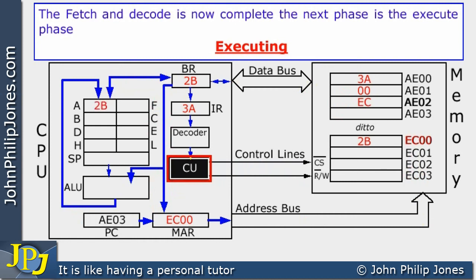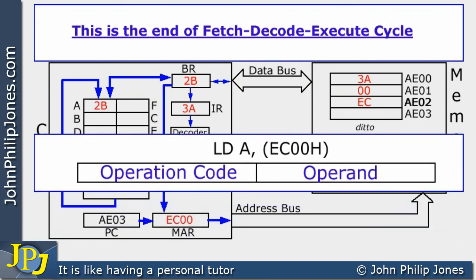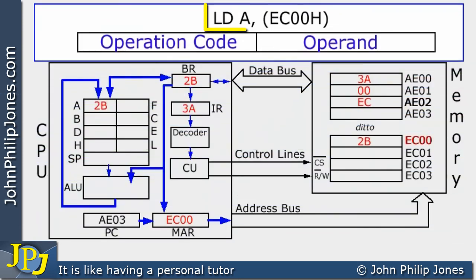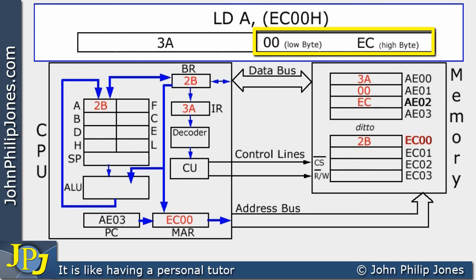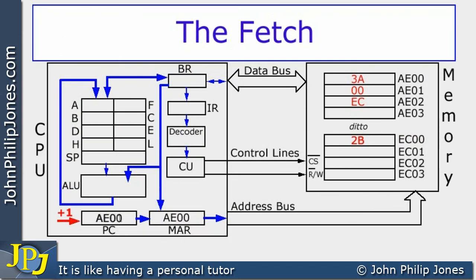And that completes the execute cycle. So we've just seen the fetch-decode-execute cycle. Here we can see the original assembly language instruction, with the opcode and the operand where the operand is split in two — low byte, high byte. To run through quickly: this is the fetch, decode, execute cycle.